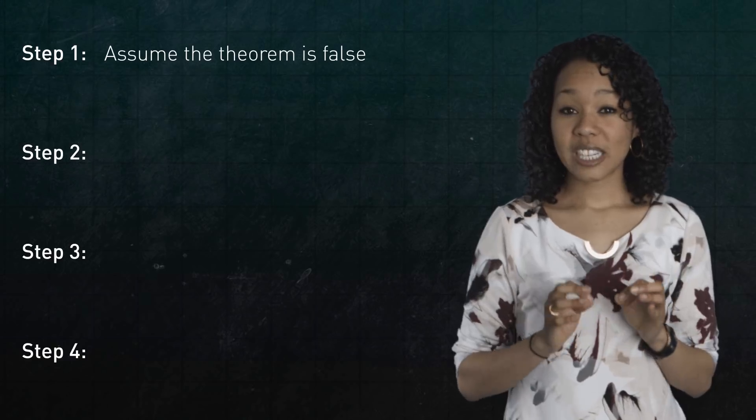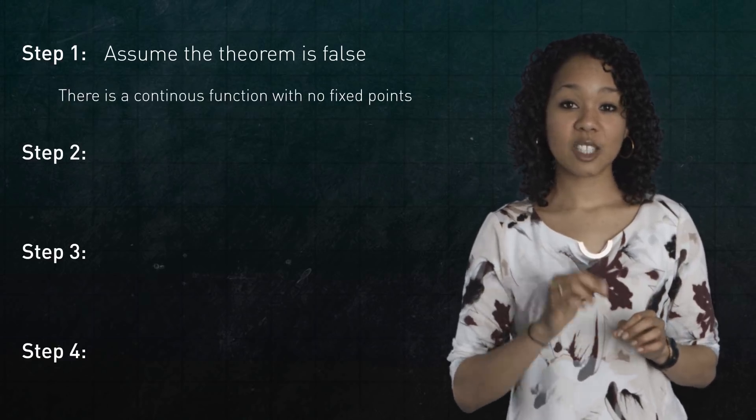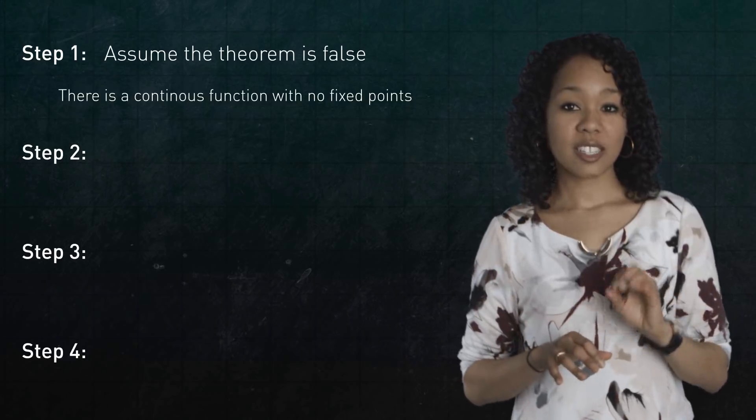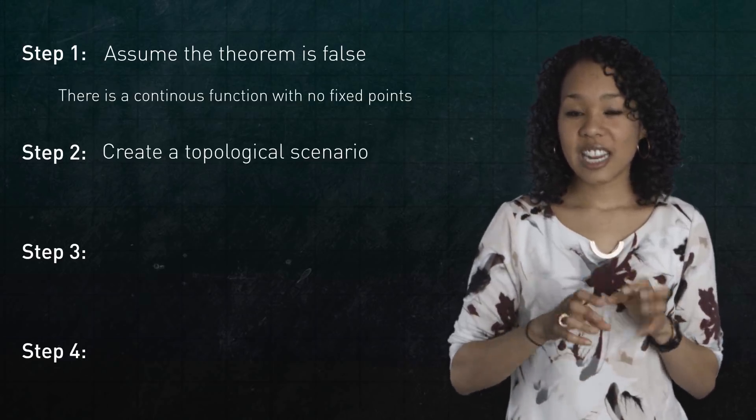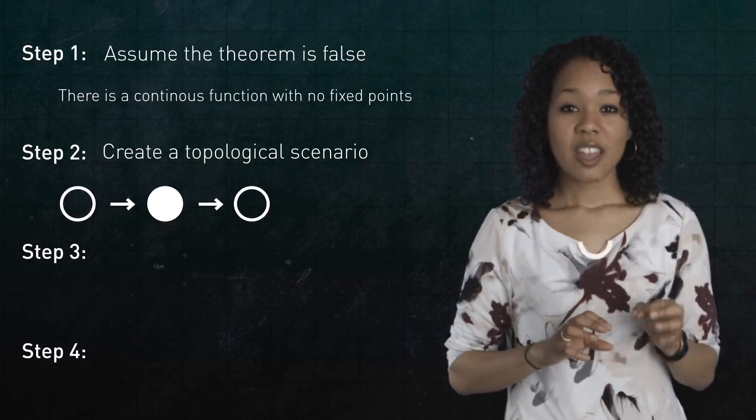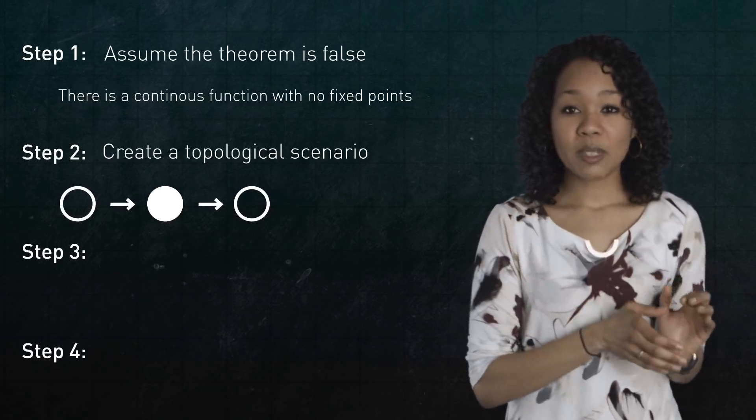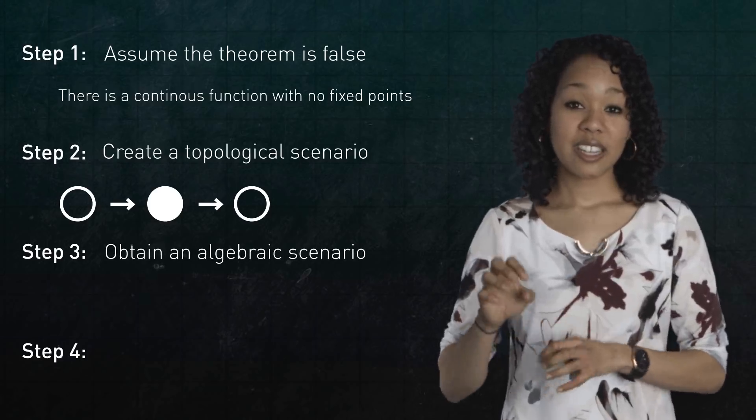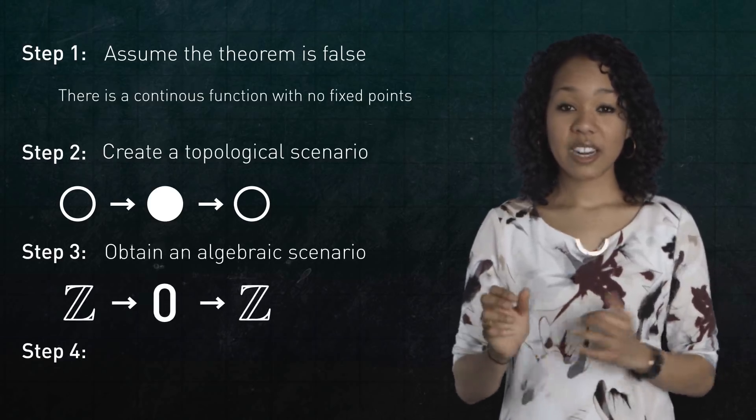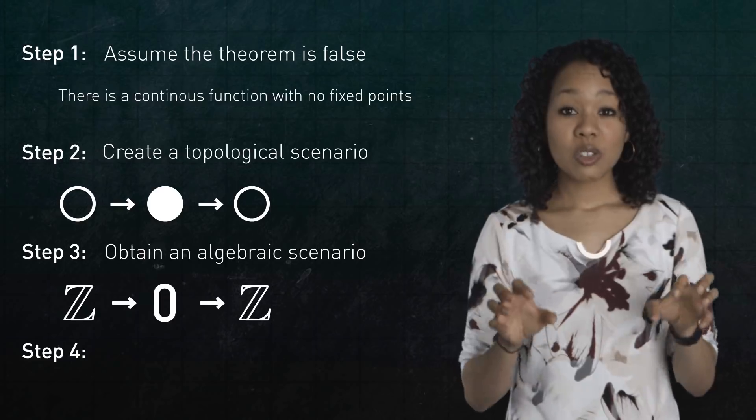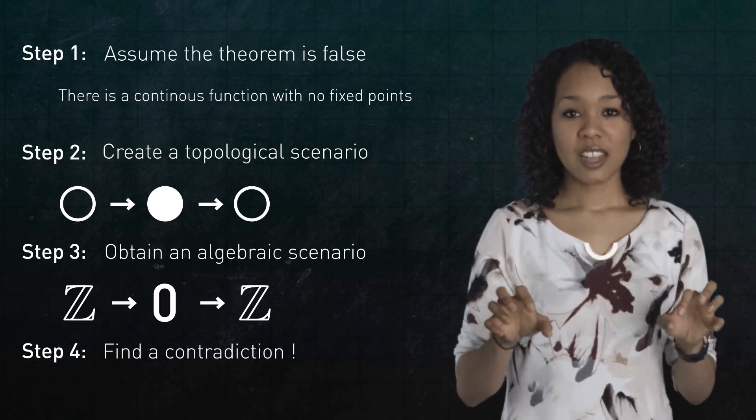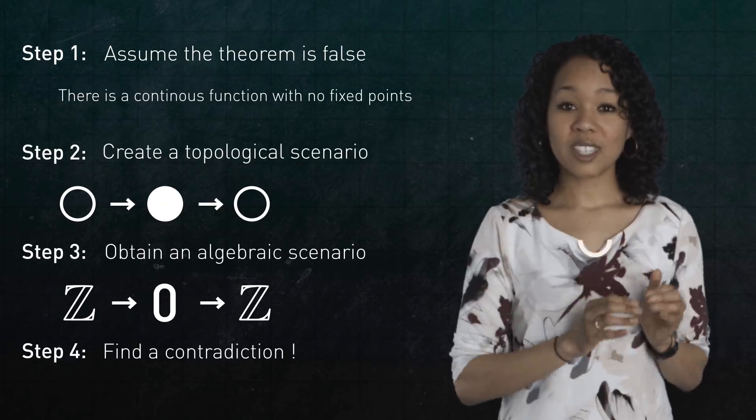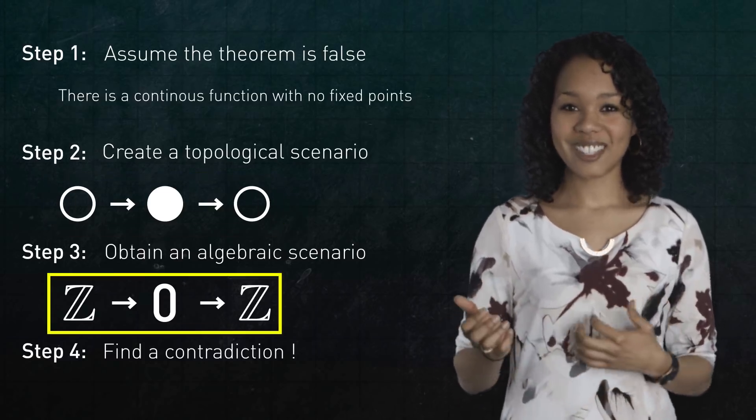Here's an outline of the next few minutes. We'll start by assuming the theorem is false. So we'll assume there's a continuous function from the disk to itself with no fixed points. Then we'll use that assumption to construct a scenario between the circle and a disk. Then we'll use the portal from topology to algebra to get an analogous scenario between the integers and zero. Finally, we'll discover that the two scenarios do not match. This will contradict the key feature of our portal. Whatever happens in one realm should be mirrored in the other. All right, let's start.